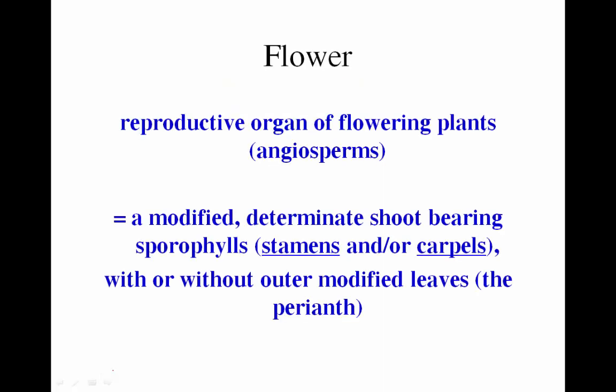Let's continue our discussion of reproductive terminology with a quick review of the flower. The flower is the reproductive part of the plant — it's a modified shoot. It's determinate in that it ceases growth, growing through a certain number of nodes and internodes: the sepals, petals, androecium, and gynoecium. It stops growing right after producing the reproductive parts — the stamens, which are the male parts, and the carpels, which are the female parts.